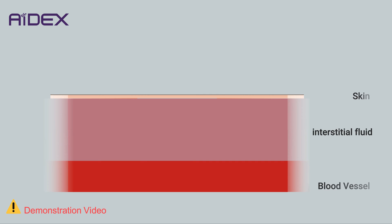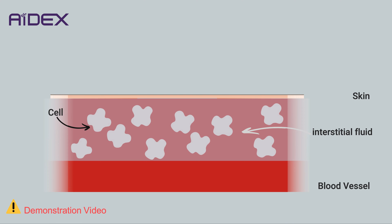Interstitial fluid, also referred to as intercellular fluid, is the fluid that resides in the spaces between cells within different tissues of the body. Its primary function is to act as a medium for the transportation of various substances between the blood vessels and the cells of those tissues.